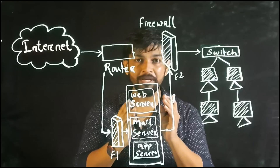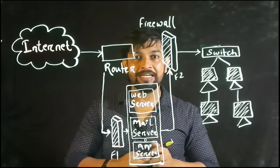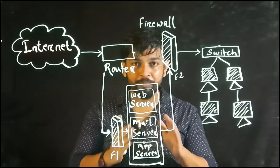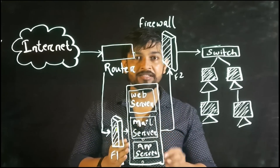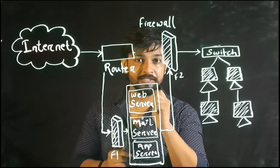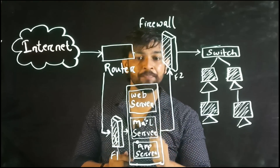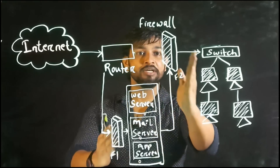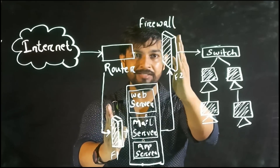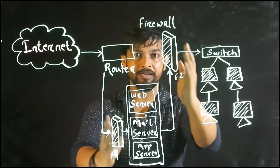So this is the demilitarized zone. What is the meaning of demilitarized zone? It is the area where the military is forbidden — it's a high security area. That is the reason this network zone is also called a demilitarized zone, because there are two boundaries: F1 (external) and F2 (internal).